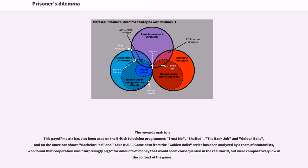This payoff matrix has also been used on the British television programs Trust Me, Chef Did, The Bank Job, and Golden Balls, and on the American shows Bachelor Pad and Take It All. Game data from the Golden Balls series has been analyzed by a team of economists, who found that cooperation was surprisingly high for amounts of money that would seem consequential in the real world, but were comparatively low in the context of the game.